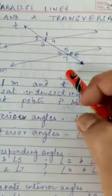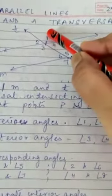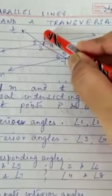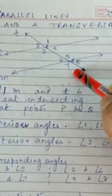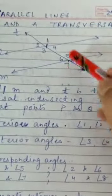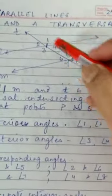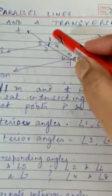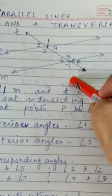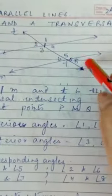Now, which are the alternate exterior angles? Angles 1, 2, 7, and 8 are exterior. So, angles 1 and 7 are alternate exterior angles. Similarly, angles 2 and 8 are alternate exterior angles.